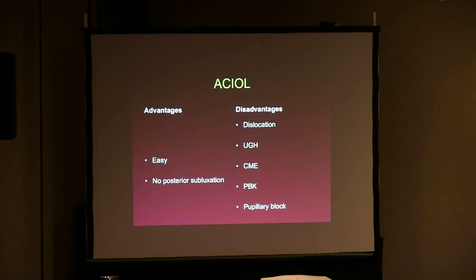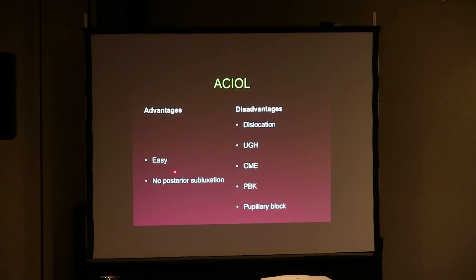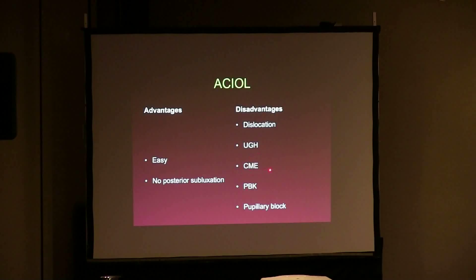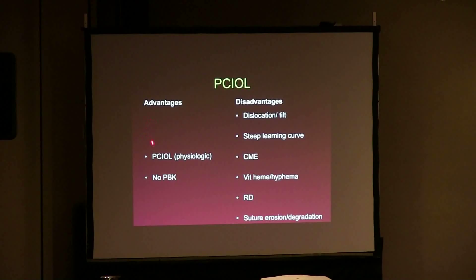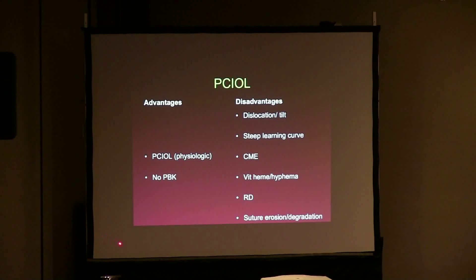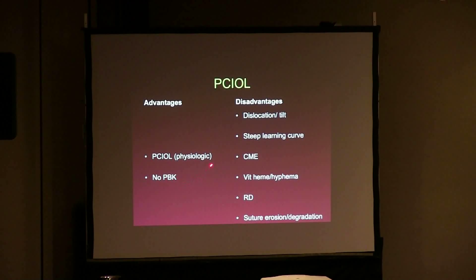The advantages and disadvantages of each: the AC IOL is easy to do and there is no posterior subluxation. The disadvantages are it can dislocate, tilt, move within the angle, lead to pseudophakic bullous keratopathy, rub against the iris causing uveitis-glaucoma-hyphema syndrome, inflammation leading to cystoid macular edema, or pupillary block — which is why every patient gets a peripheral iridotomy. For the posterior chamber IOL, the advantage is that's where the lens belongs — more physiologic — and lower risk of pseudophakic bullous keratopathy absent surgical trauma.